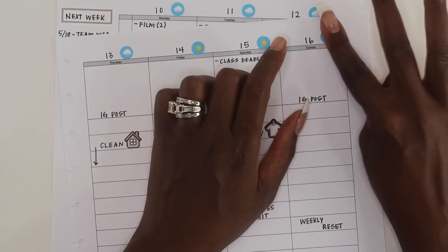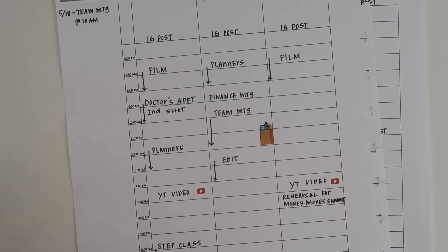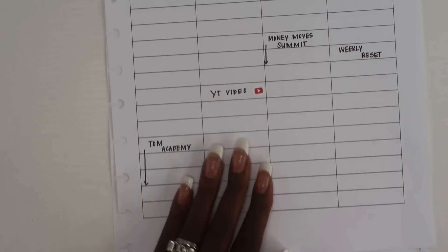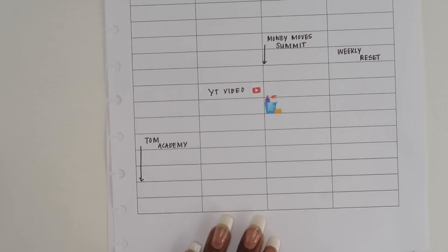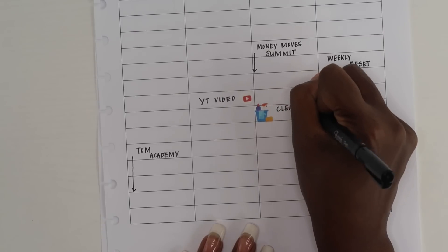I will usually use some little weather stickers to just kind of let myself know if it's raining or sunny so that I can be prepared. Also, as you are planning your day and looking at everything you want to do, you want to make sure that your days are well-rounded.